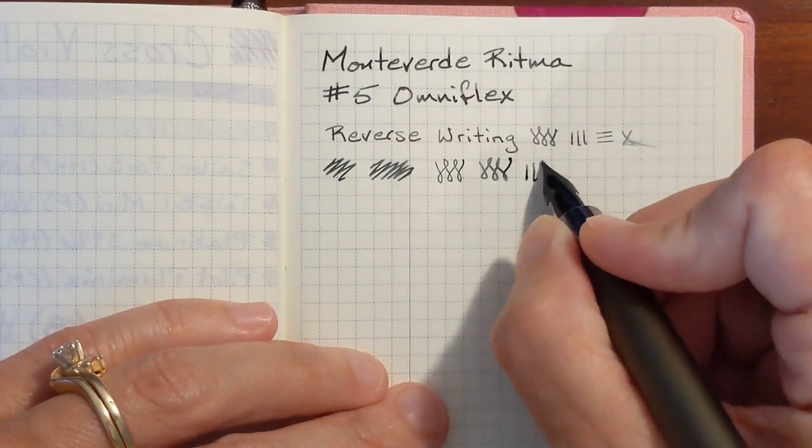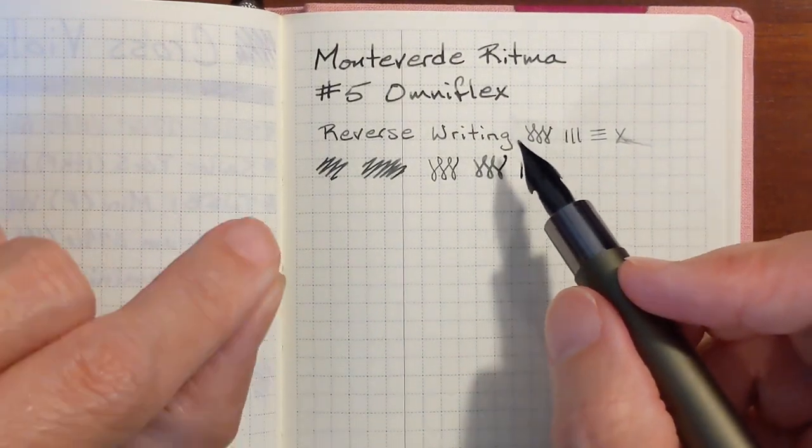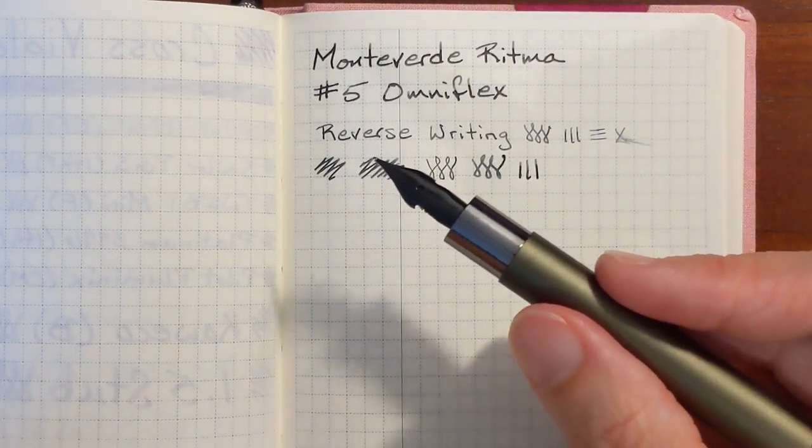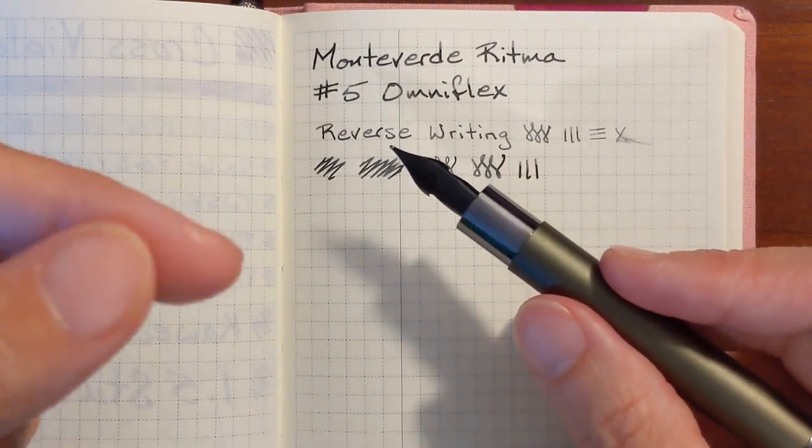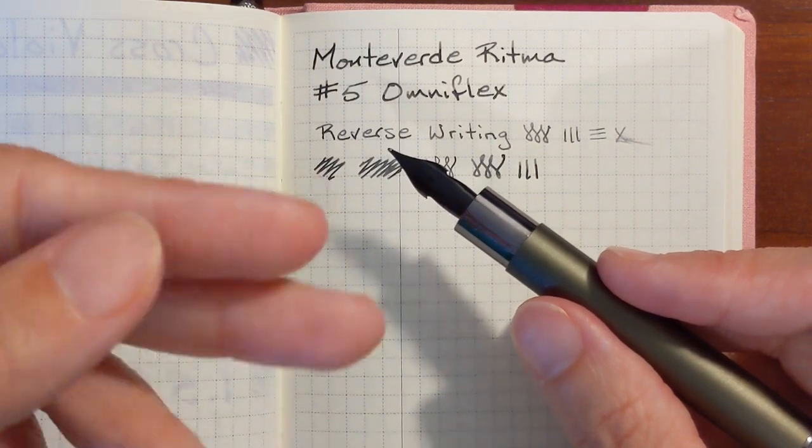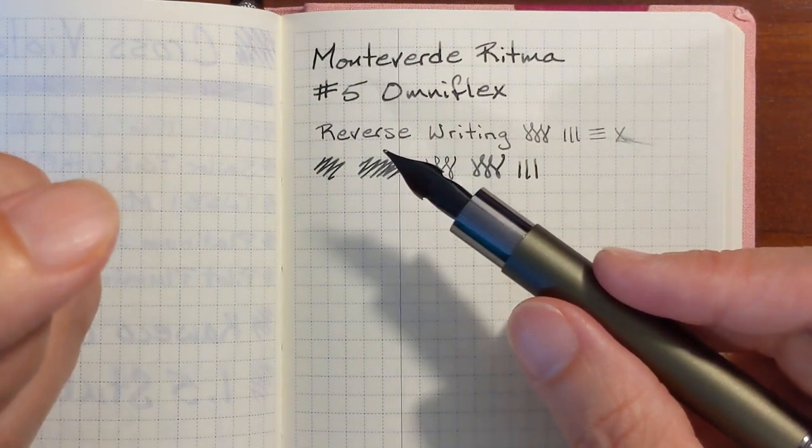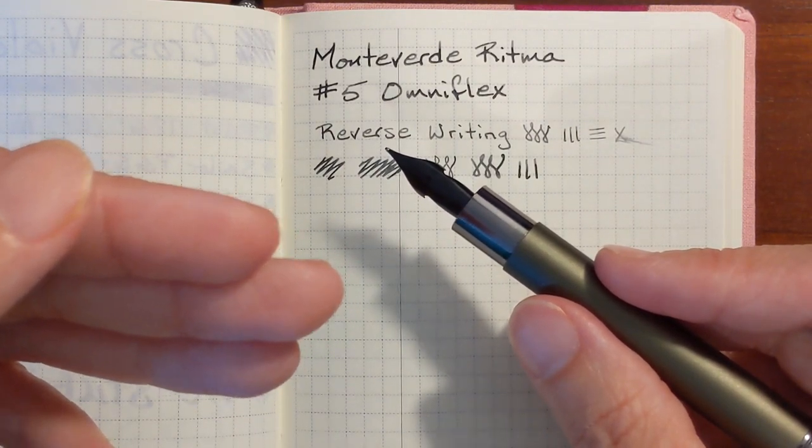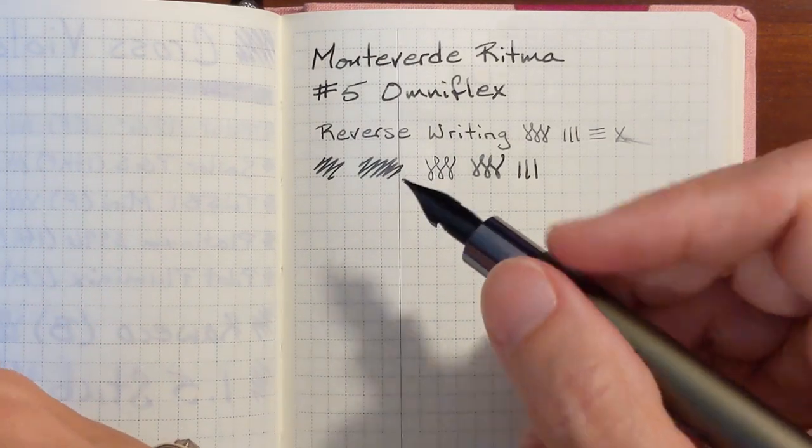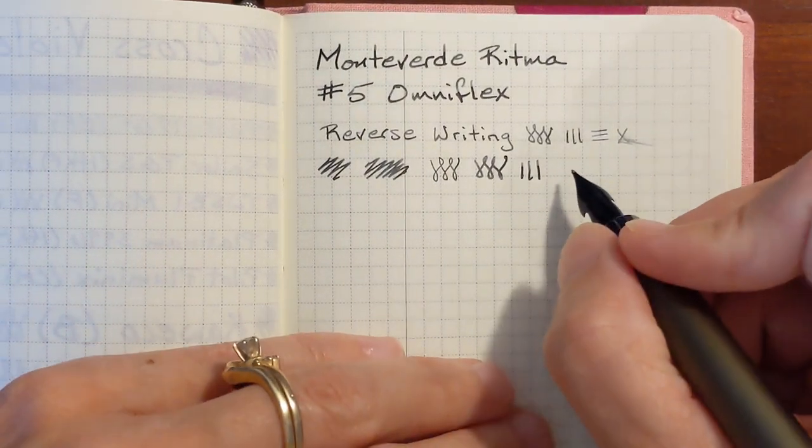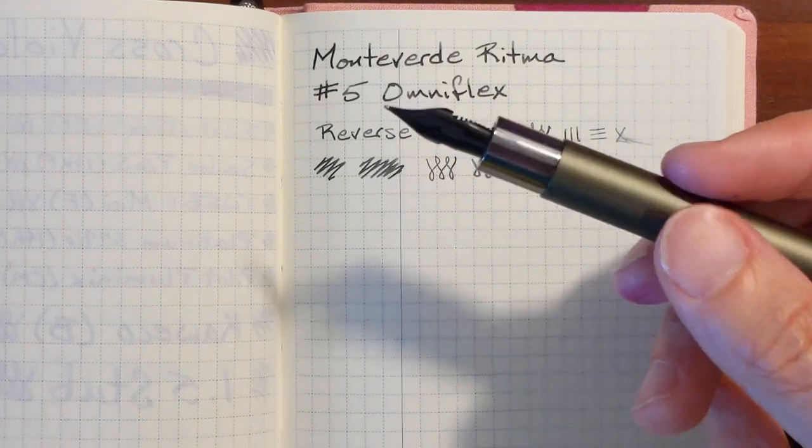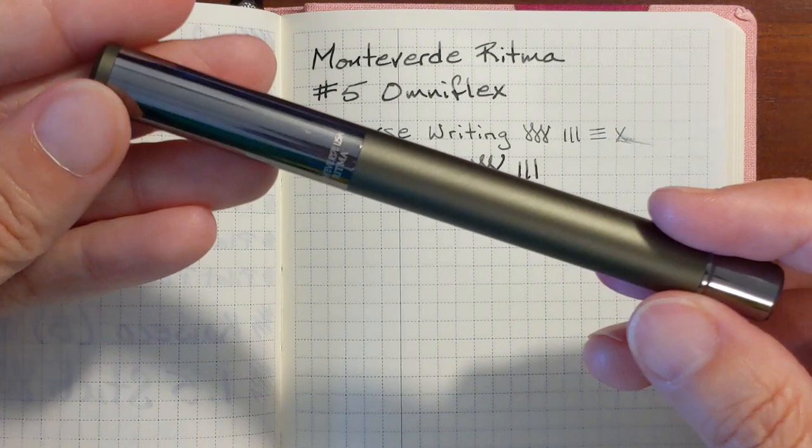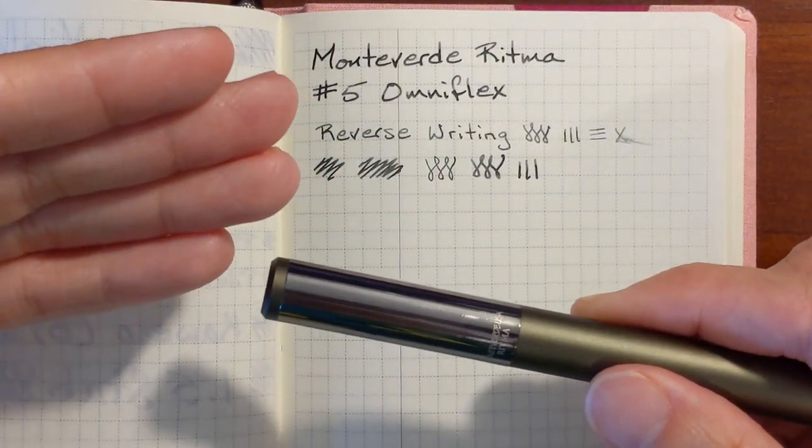And using it, I'm not as big of a fan using it on Tomoe River paper. It's nice, but I really enjoy writing with this pen and ink combination on Leuchtturm, on Rhodia, my Maruman Nemosyne notebooks. This nib feels really nice on those. And this Earl Grey ink just looks so good with the colors of this pen. I've just been really pleased with it.